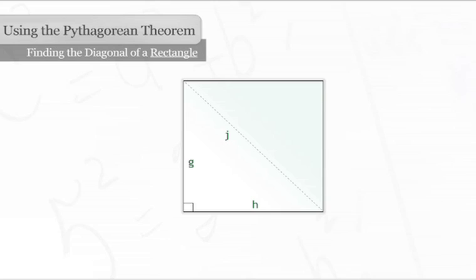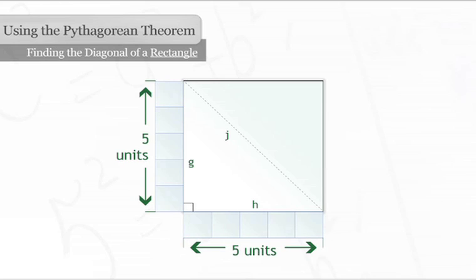Remember, all sides of a square are the same length. So both g and h are 5 units long.